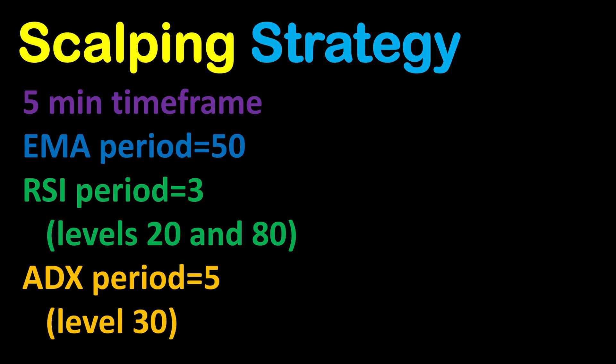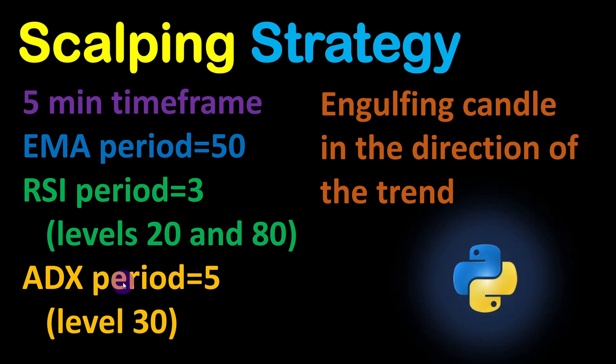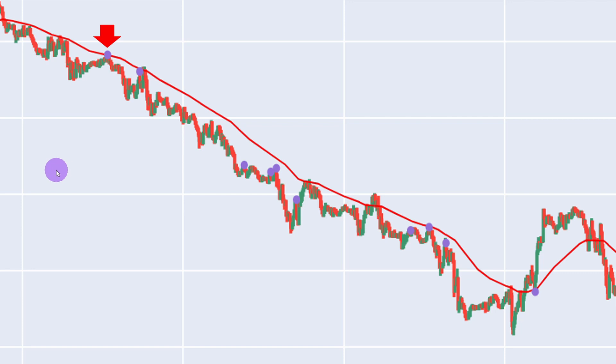When all these conditions are met we have the first part of our signal, and to get an additional confirmation I am using a candle pattern, looking for an engulfing candle along the direction of the trend. If the trend is up we look for a bullish engulfing candle, and in a downtrend we look for a bearish one. All of these indicators can be automated in Python and tested on historical data. Here is an example from the Python backtesting code: we have a clear downtrend because the candles are closing below the 50 MA curve.